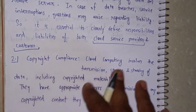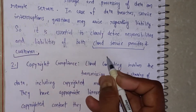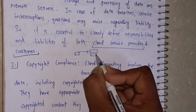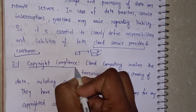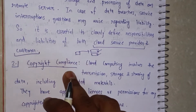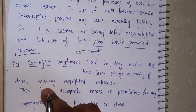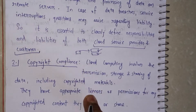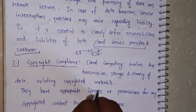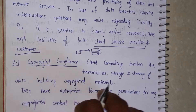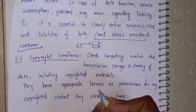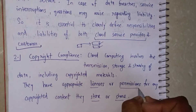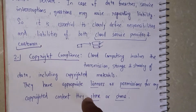The second thing is copyright compliance. There is a higher chance that someone can copy our data and use it somewhere else. For example, if I created a software and someone leaked that code, everyone would be able to access it. So we need copyright compliance in cloud computing. Transmission, storage, and sharing of data includes copyright materials. It also happens on YouTube — if someone copies a video, that person gets a copyright strike. They should have appropriate license and permission for any copyright content they store and share.